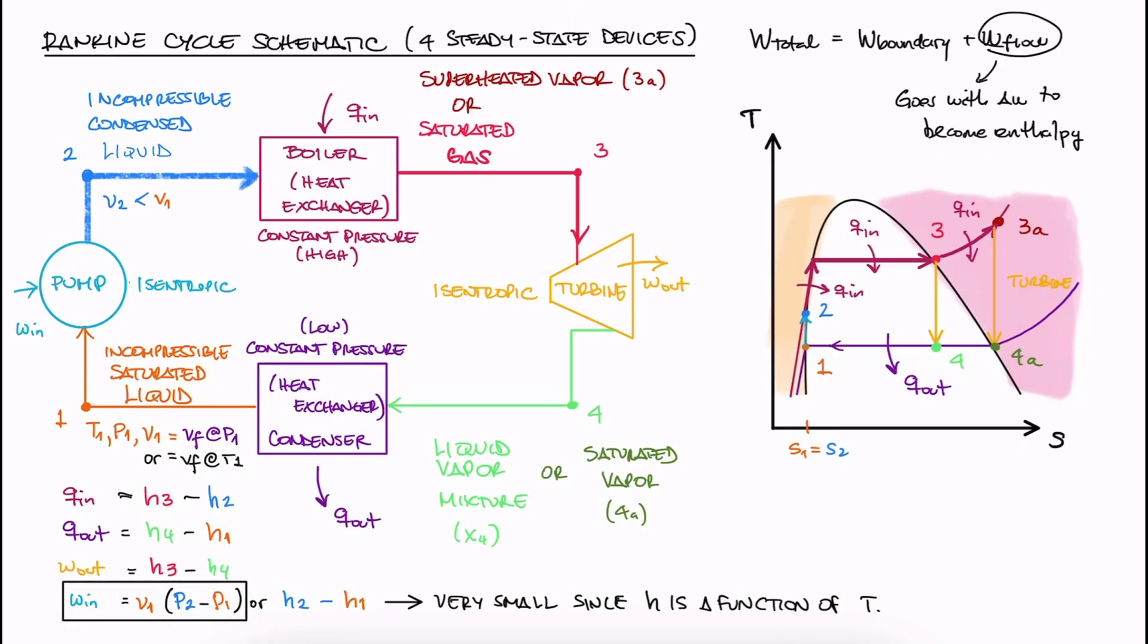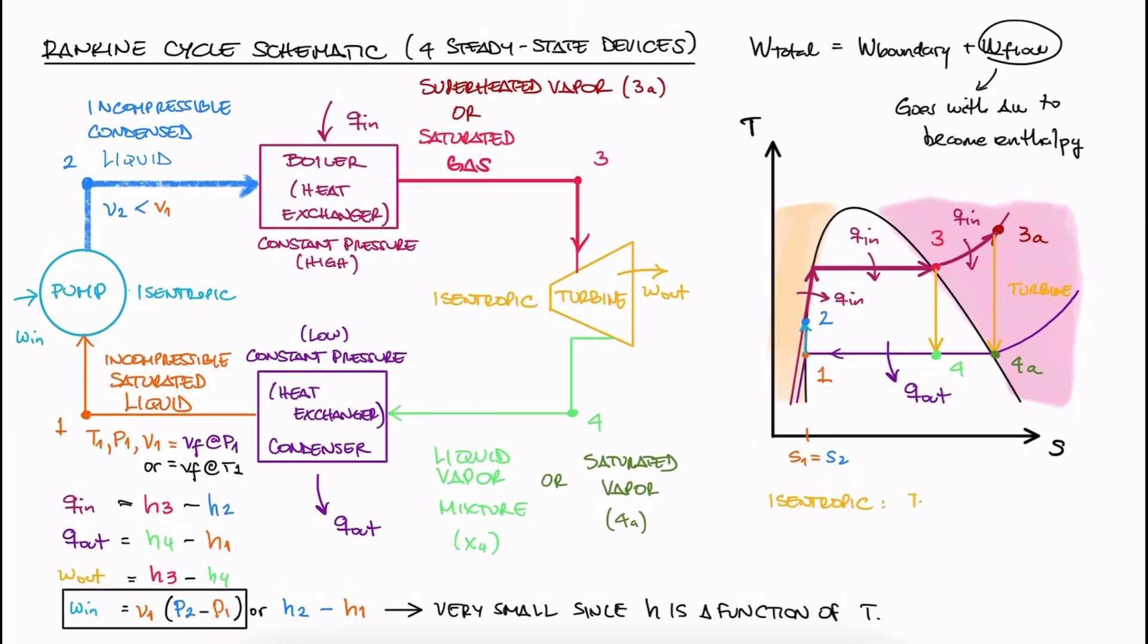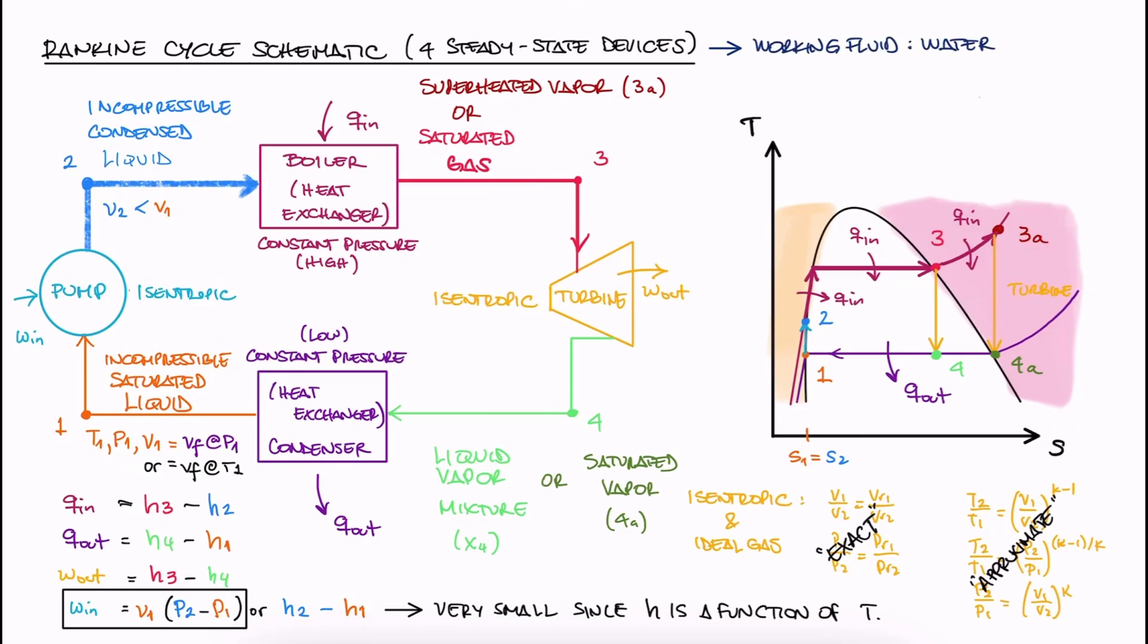The second major difference is that for the isentropic expansion process at the turbine, we will not be using any of the isentropic relationships we've been using for the last six lecture topics. The exact and approximate analysis sets of equations are all for ideal gases. Since water and the other substances we can use for a Rankine cycle are not ideal gases, and more importantly, they're not even gases for half of the cycle, they're liquid. We'll just use our property tables to find S3 equal to S4, still isentropic, and find other properties that correspond to those specific entropy values.